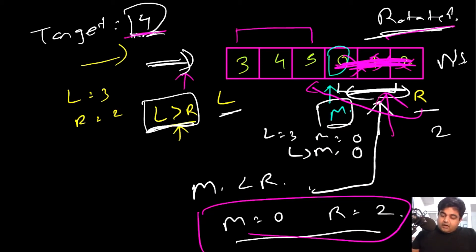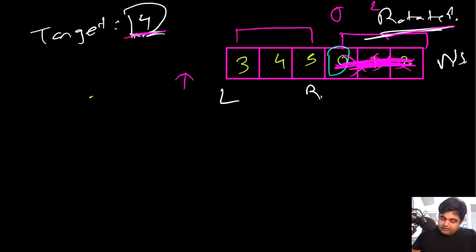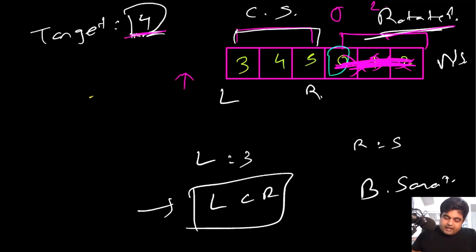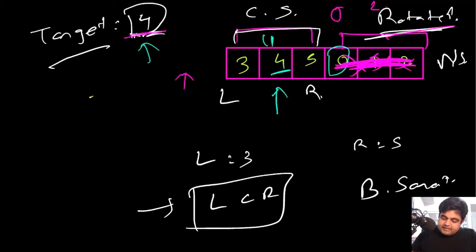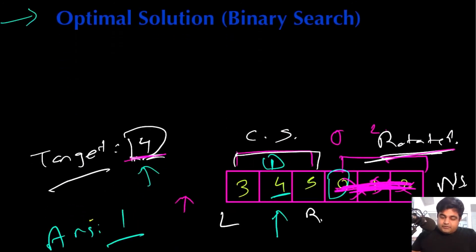Now our left pointer is at three and right pointer is at five. Left is less than right, which means this portion — three, four, five — is completely sorted. Since it's sorted, we just apply binary search. The middle value is four, which is exactly the target we're looking for, so we return the index position of four, which is one. That is our answer. The key idea is using the middle value to determine which portion of the array is sorted, then deciding which direction to jump.